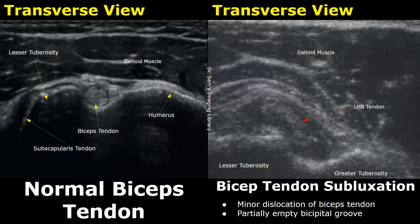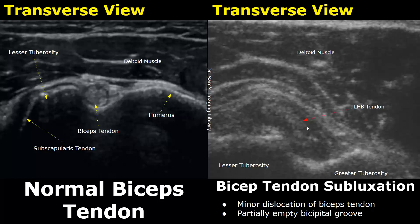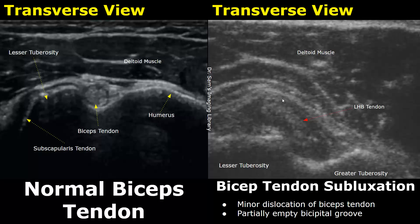Subluxation means partial dislocation, and in this case there is a biceps tendon subluxation — a minor dislocation of the biceps tendon. We may find a partially empty bicipital groove. This is the bicipital groove, and it is partially empty because of subluxation of the biceps tendon, which is slightly dislocated from its original location.